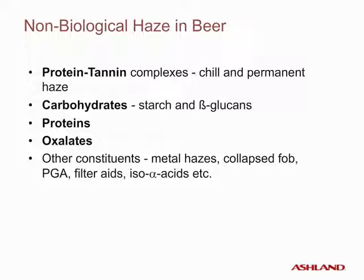There are various sources of non-biological haze in beer. Protein-tannoid complexes are the source of chill haze and permanent haze, which are the most common type found in beer. Carbohydrate haze is caused by residual starch or beta-glucans as a result of using under-modified malt or inefficient starch conversion regimes used in the mashing stage. Other sources include proteins and oxalates. Minor constituents such as metals, collapsed FOB, propylene glycol alginate, filter aids, and iso-alpha acids can also cause haze.